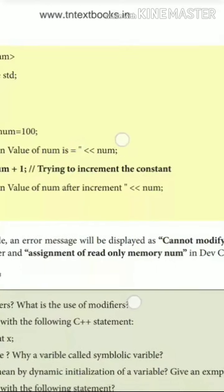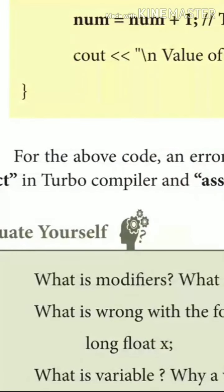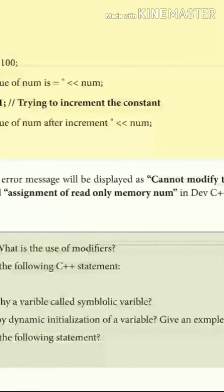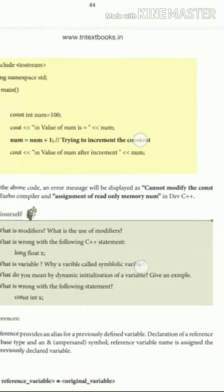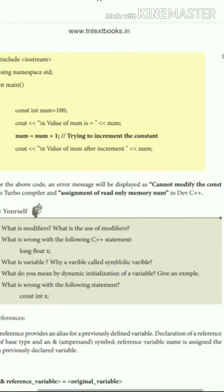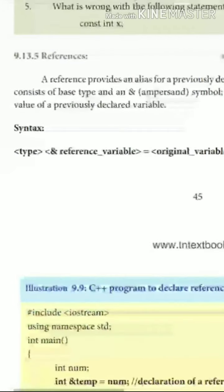Before executing the program you have to compile it, and the compiler will tell you: 'assignment of read-only memory.' This means it is read-only memory and you cannot change it. An error message will be displayed when the above program is compiled.